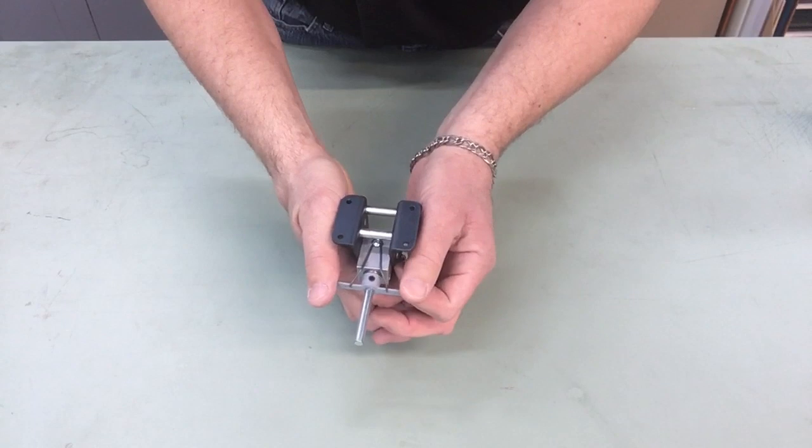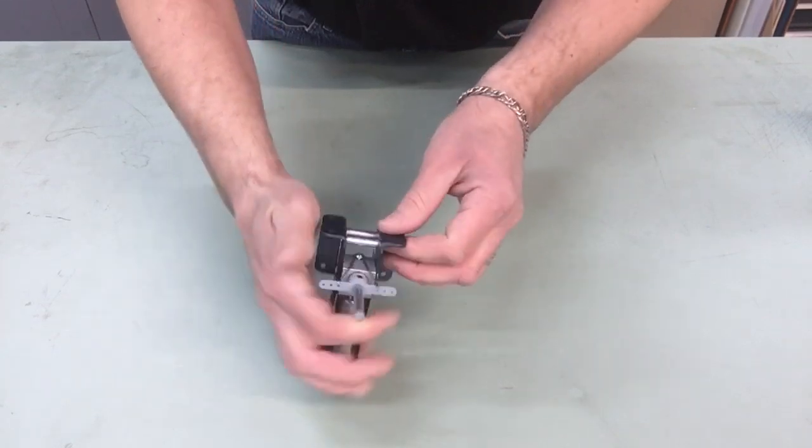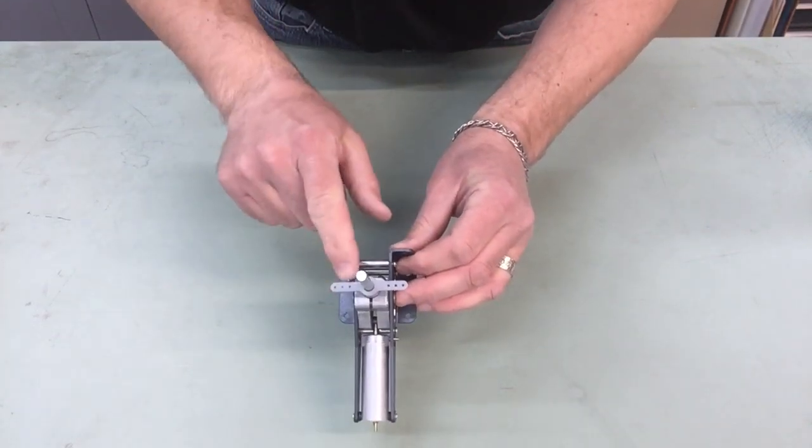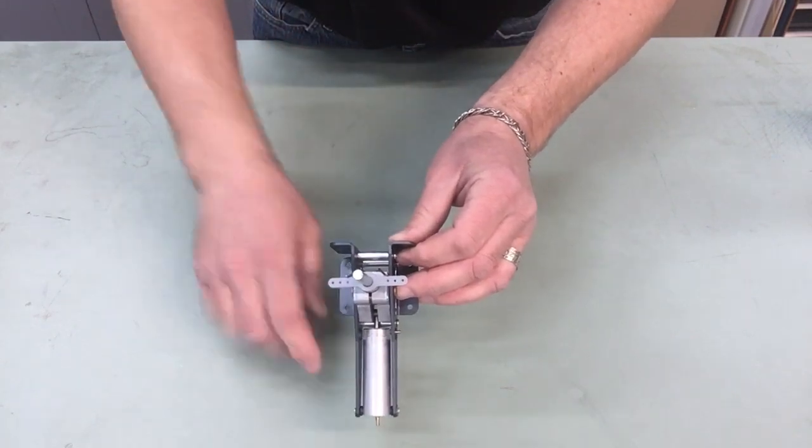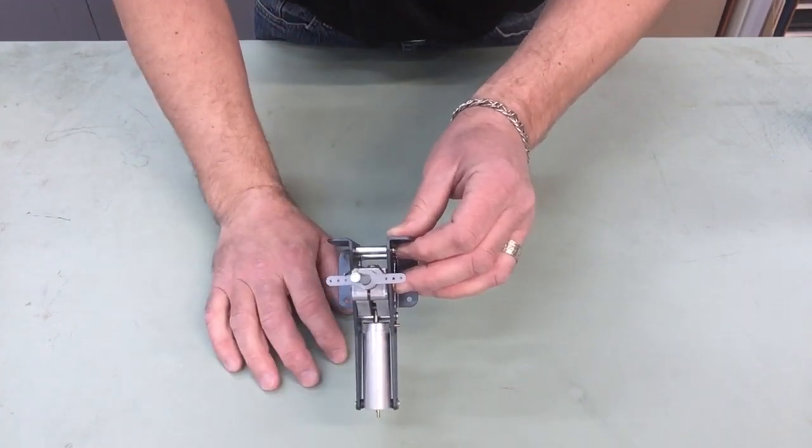Again like I did say before this is a pull-pull steering. You have three attachment points on each side for attaching your rods for your steering.